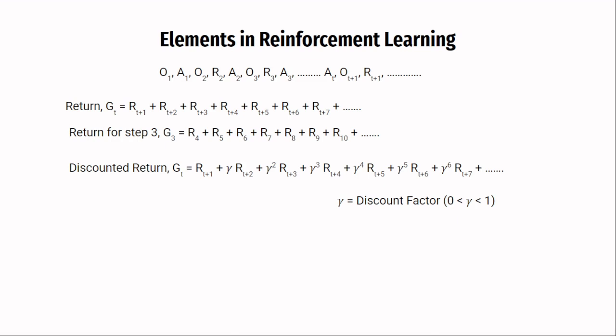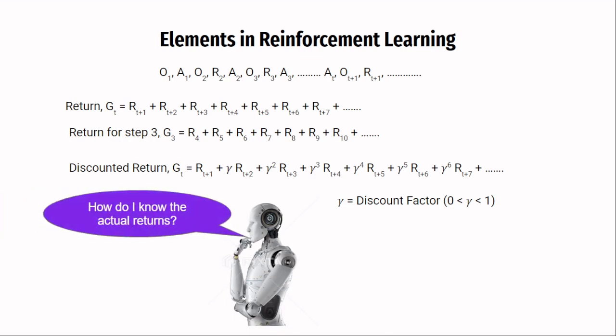An obvious question arises here. Of course, it makes sense to take actions which give us the maximum return. But how does the agent know what the actual return for a particular observation will be? It has not taken those actions yet. That said, the agent does not know the actual returns and it has to learn what the return will be so that it can behave optimally. It has to estimate the return.